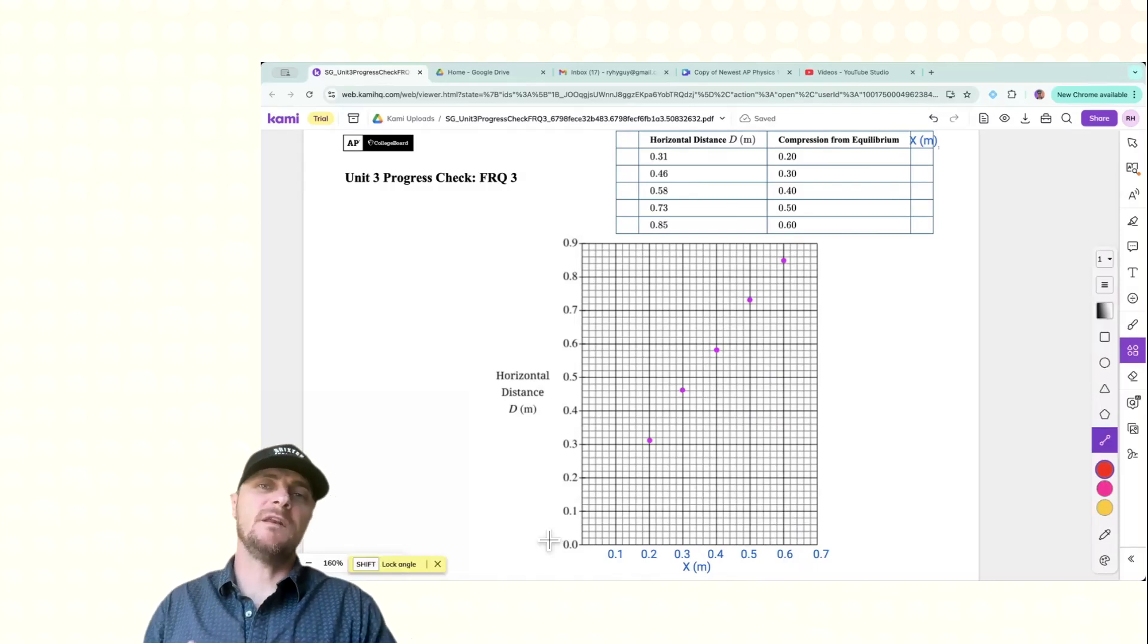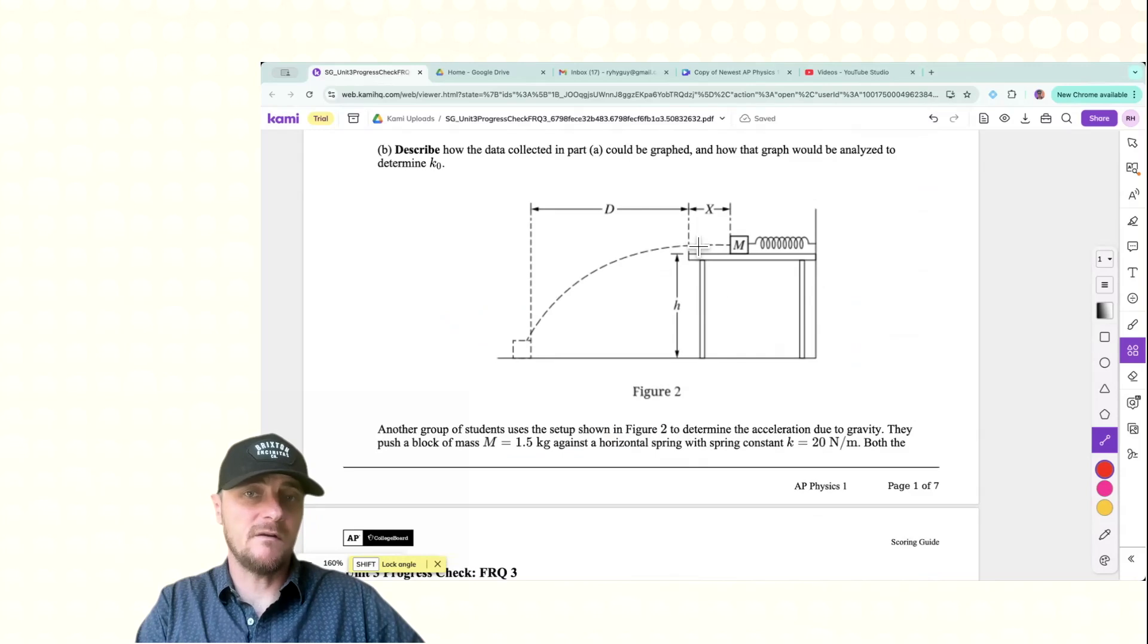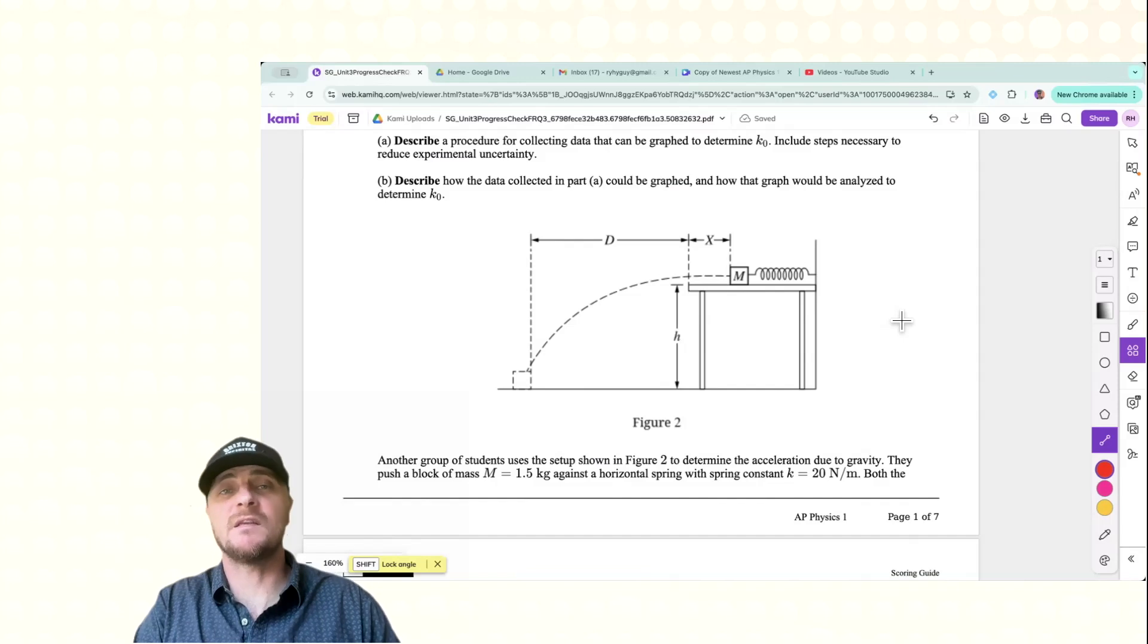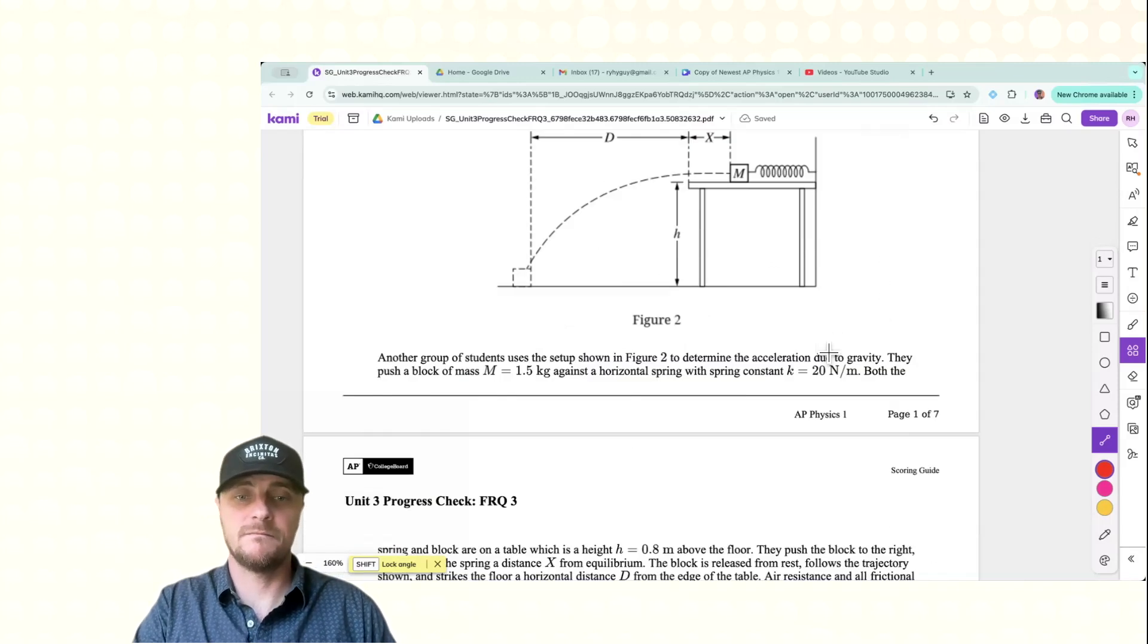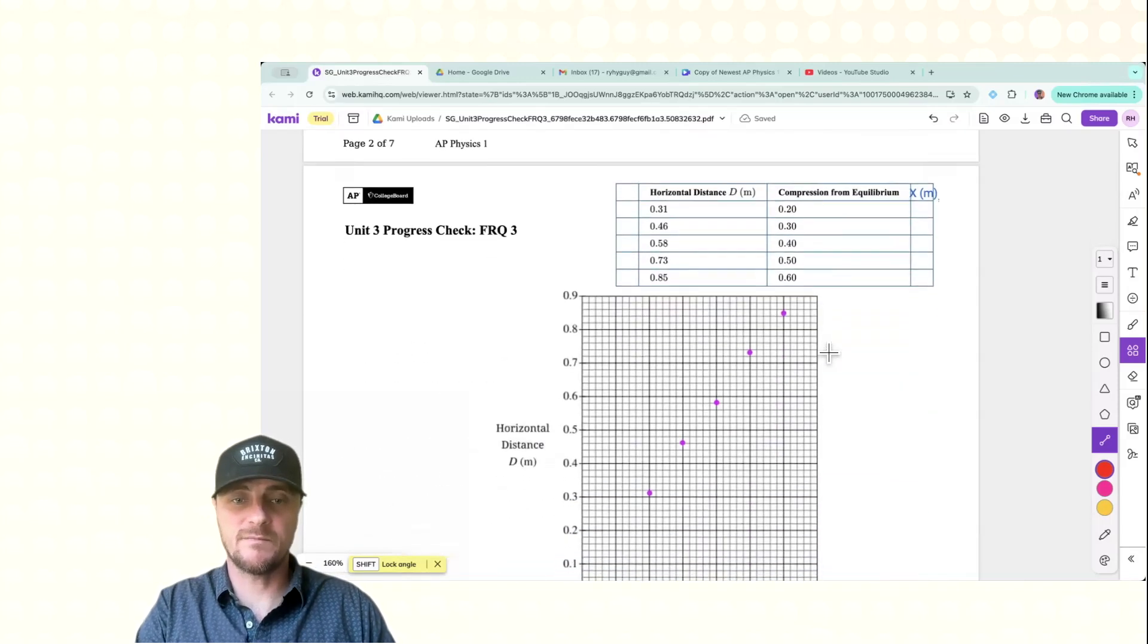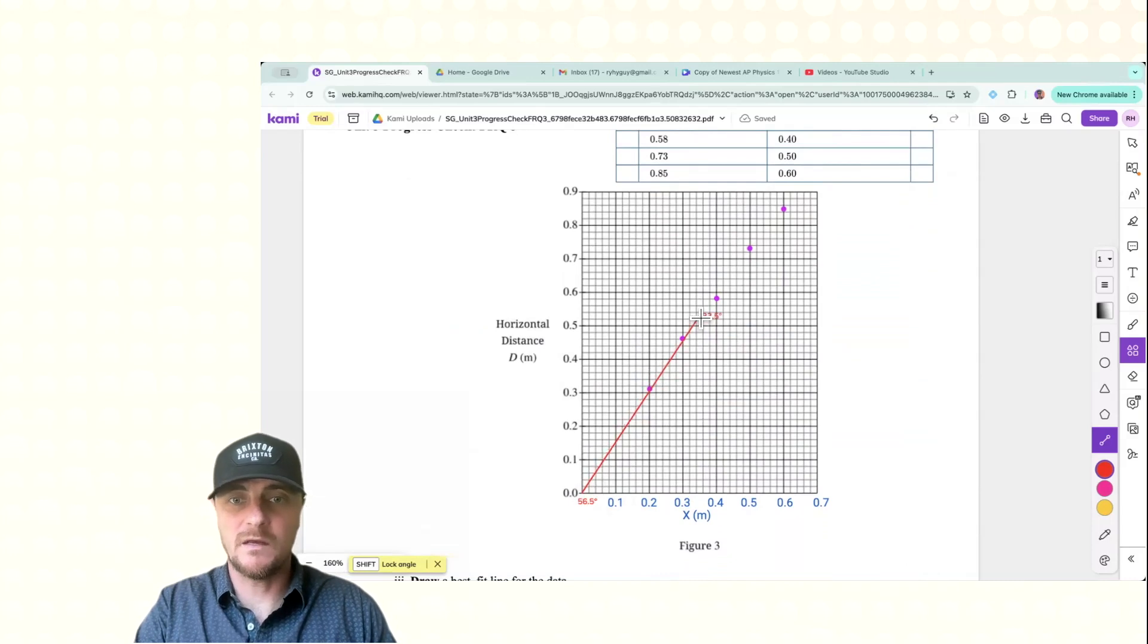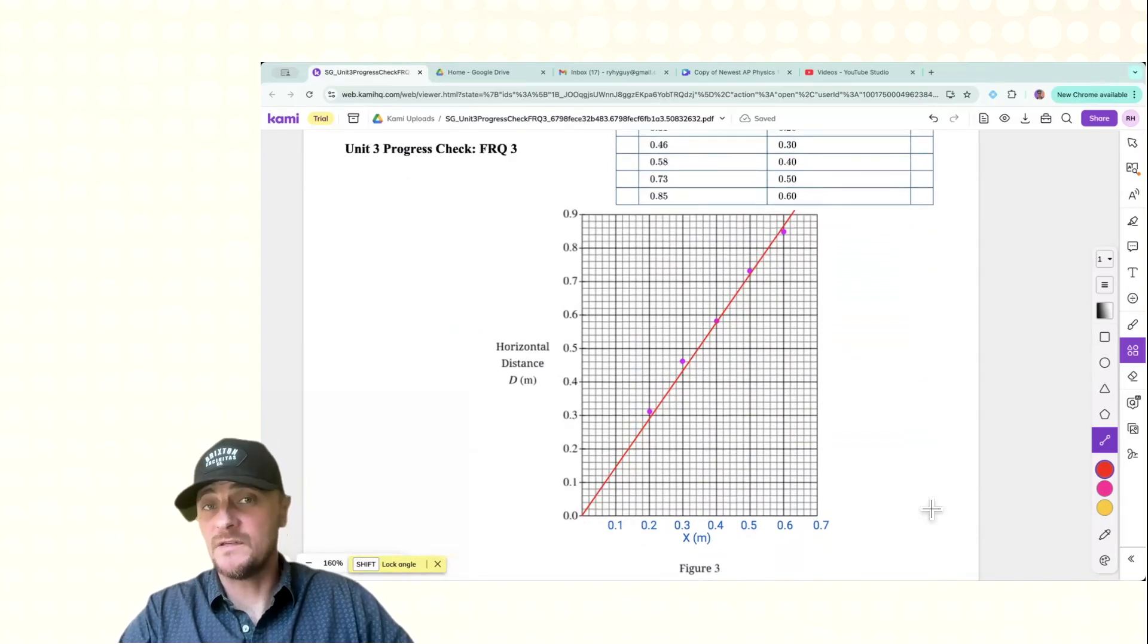Realize we've just done C2. So before I put the line of best fit in, I want you to realize something. Here, 0, 0 makes sense. It makes sense with our physical system. If I don't compress this mass at all, 0x, I'm going to get 0 distance d. So in this case, it does make sense to use 0, 0. And that's going to help me with a reference point for my line. I'm going to start my line, and I'm going to pull it through until I've averaged out the data as best as possible. And it looks like that's about it right there. So that's it for part C3.